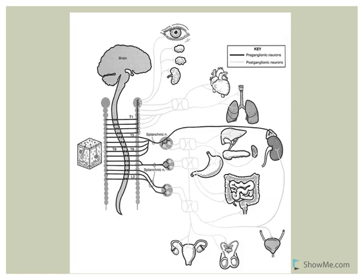The sympathetic nervous system is referred to as the thoracolumbar division based on the location of the cell bodies of the pre-ganglionic neurons. Thoraco - think thoracic; lumbar - think lumbar.